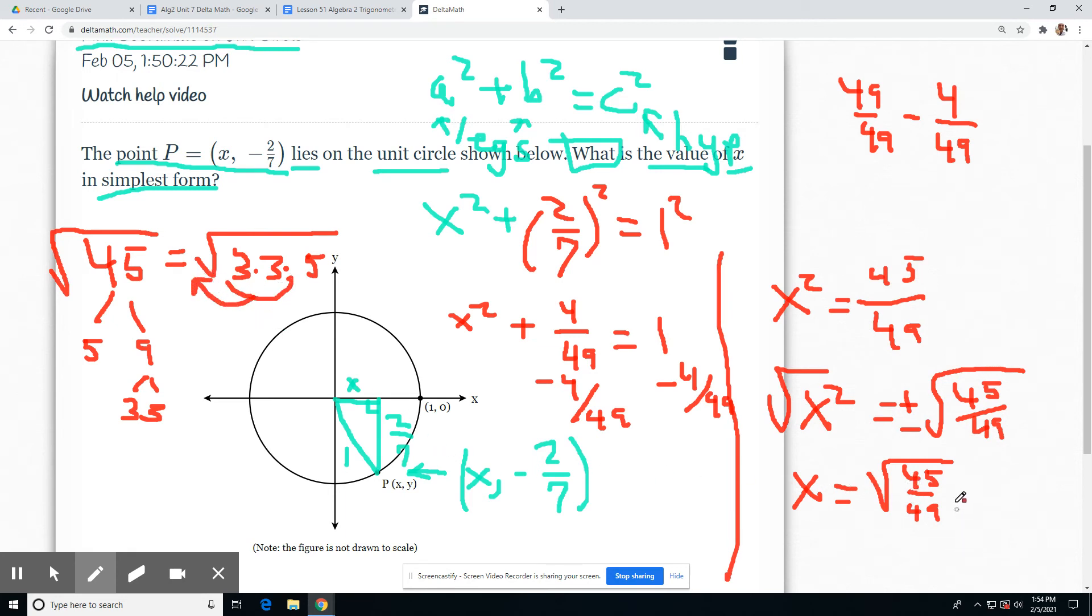The square root applies to both the top and the bottom. The square root of 45 and the square root of 49. So all this equals X equals square root of 45 simplified into 3 radical 5. And the square root of 49 is 7 times 7, 7.